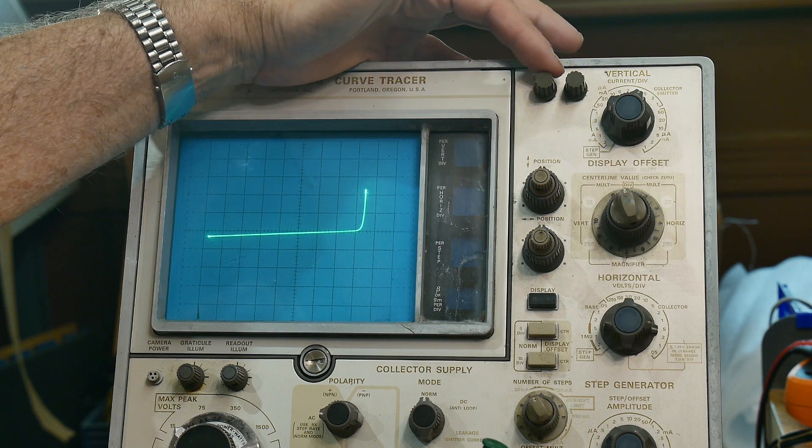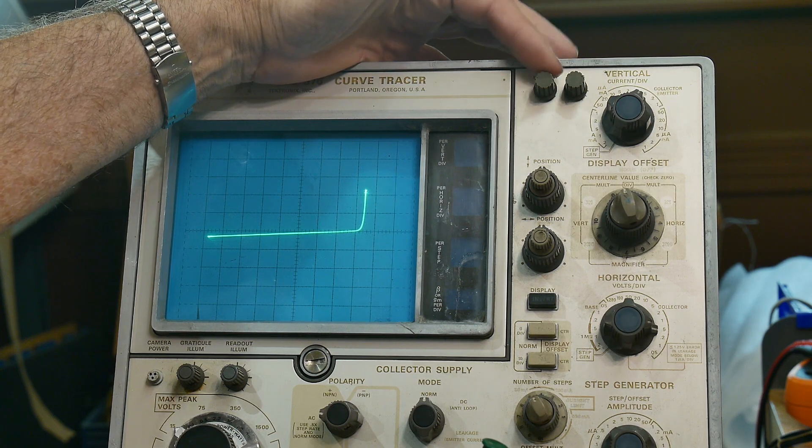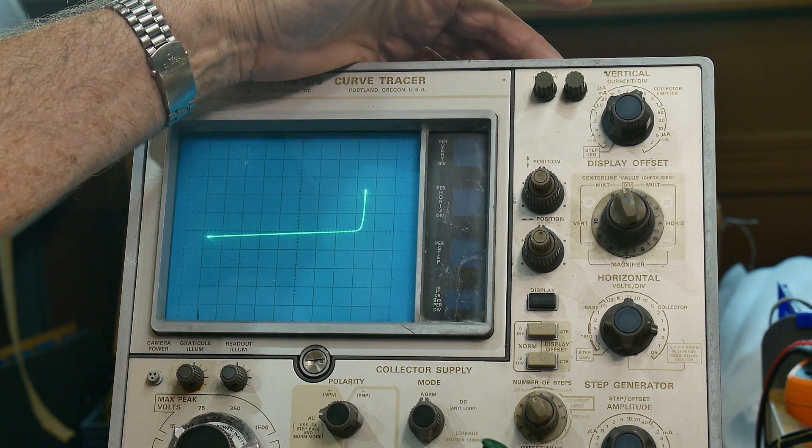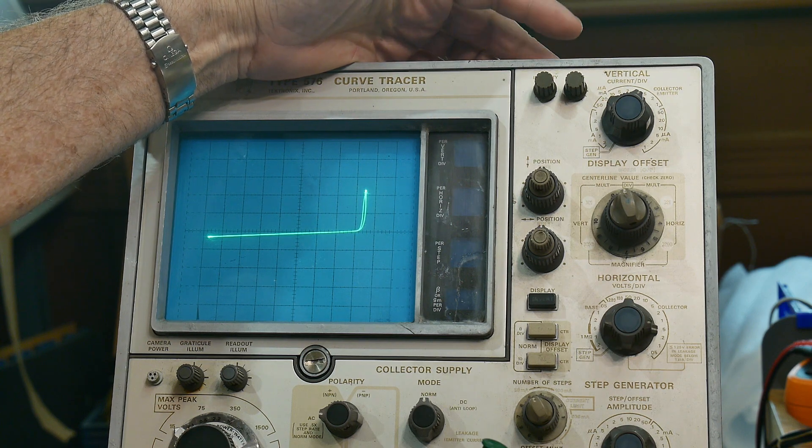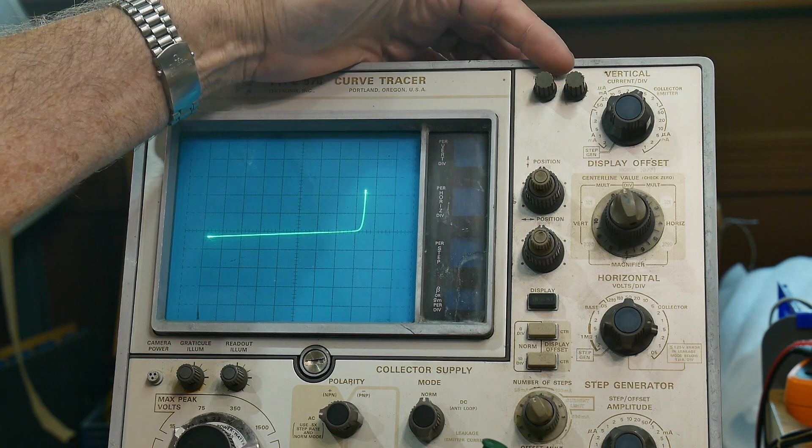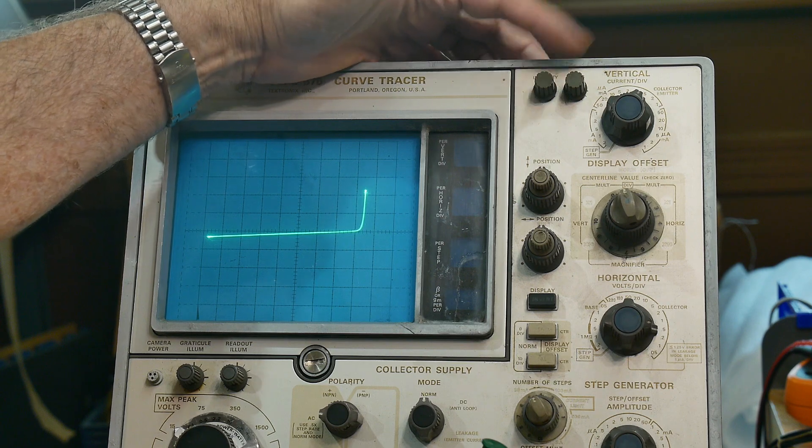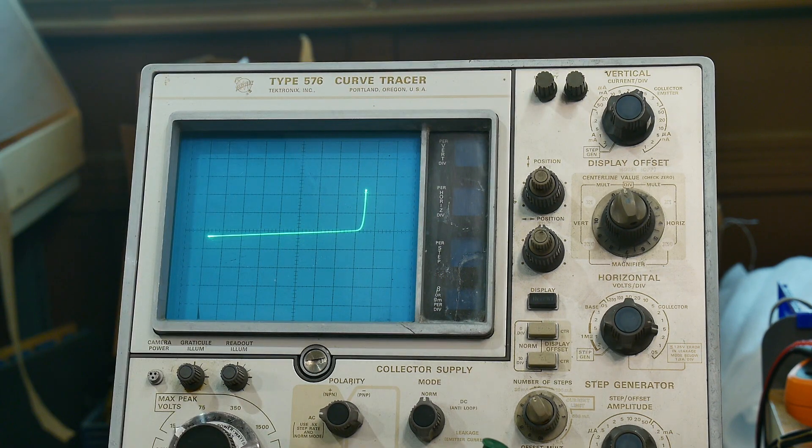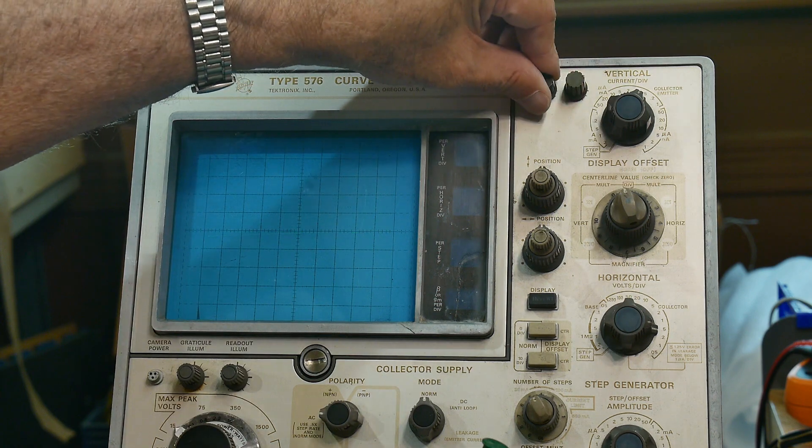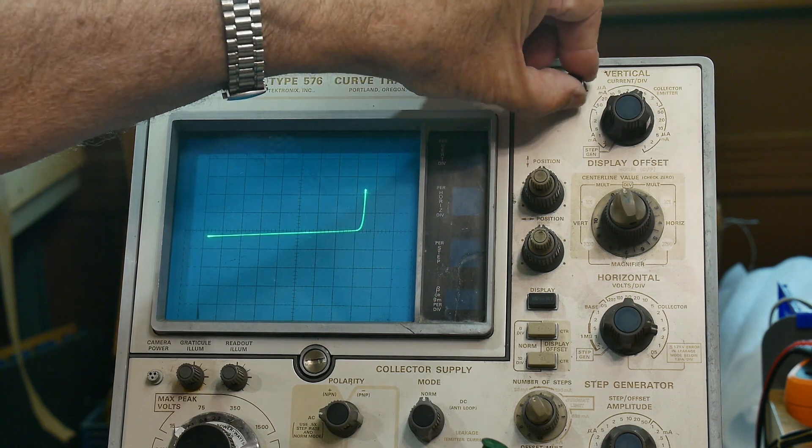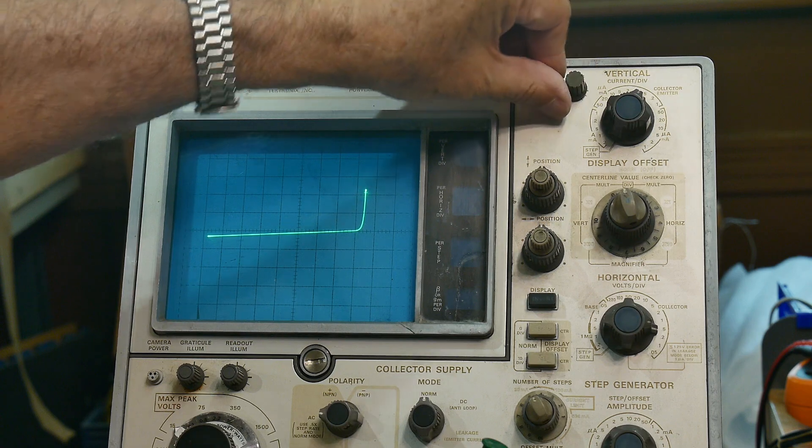I did put new knobs on here, these were missing. So I stole knobs off my old Kikusui oscilloscope. Now that I've got two of them I got a spare parts donor, so I used two of the knobs off the Kikusui. They look like a good fit.